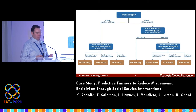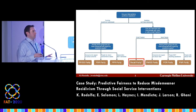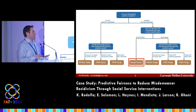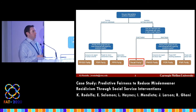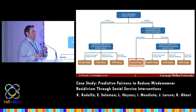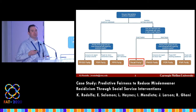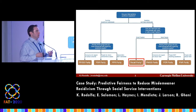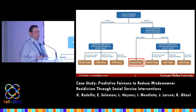For the particular case I'll be talking about, we thought about recall as a particularly salient fairness metric — that's also known as true positive rate or sensitivity, and what Hardt and others have talked about as equality of opportunity.